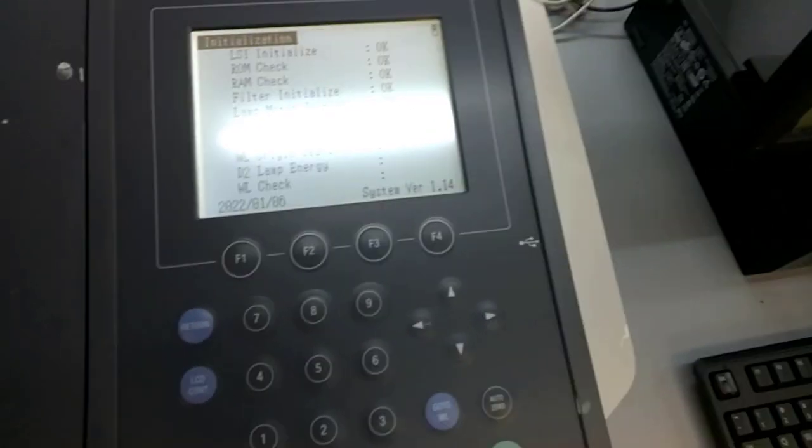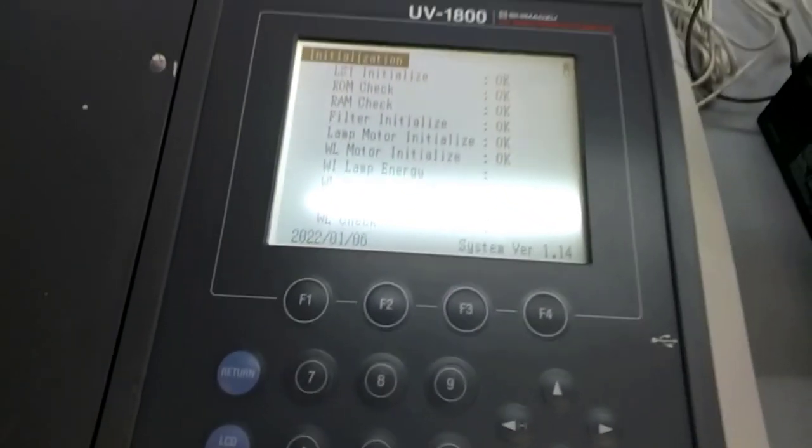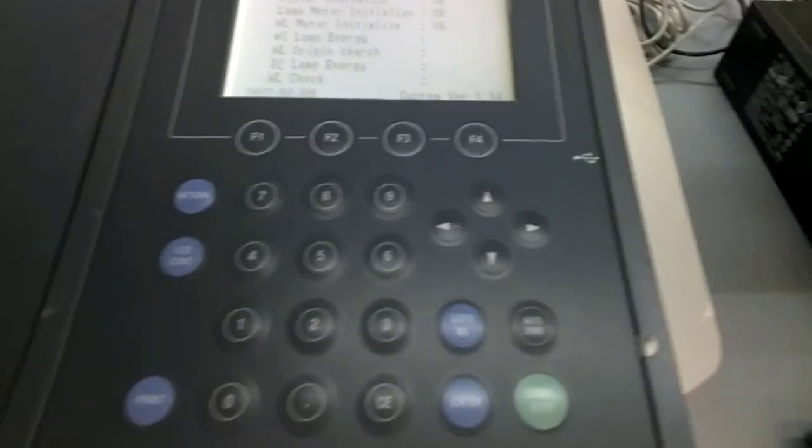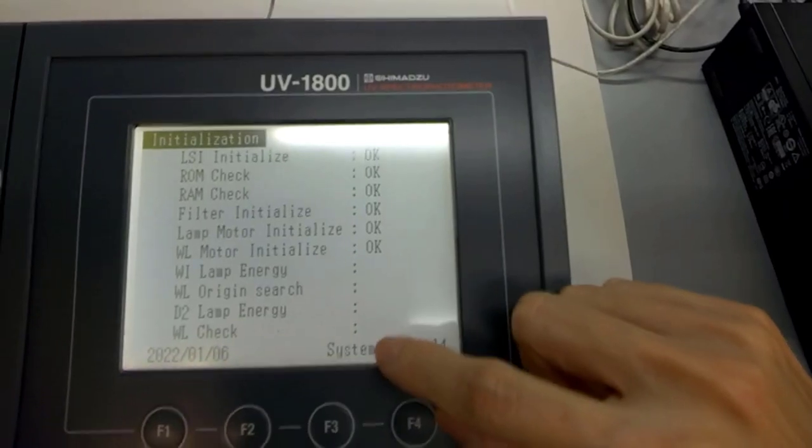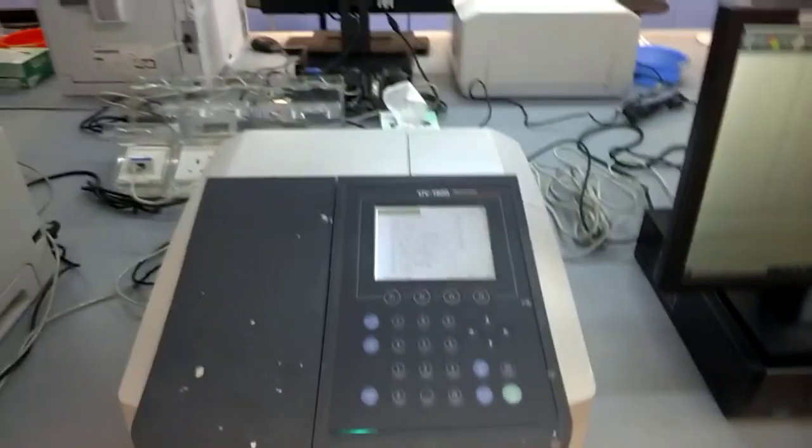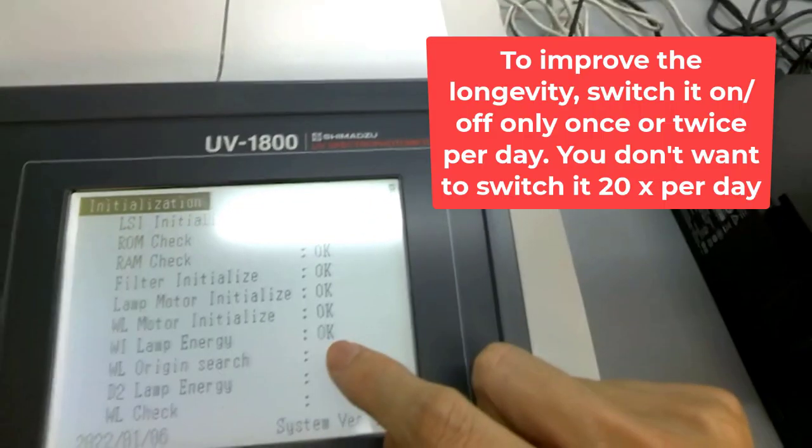So to do that, we can press the button. But we have to wait for the initialization to complete. Make sure you see that it's okay. And after a while, it will be okay. Now, one key thing to maintain the UV-Vis Spectrophotometer is we try not to turn it on and off for many times, because there's a lamp here, and it has longevity. If we turn it too many times, it will spoil. To reduce the rate of defect, we will turn it on maybe once or twice a day.